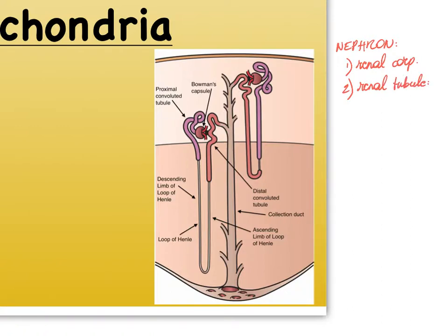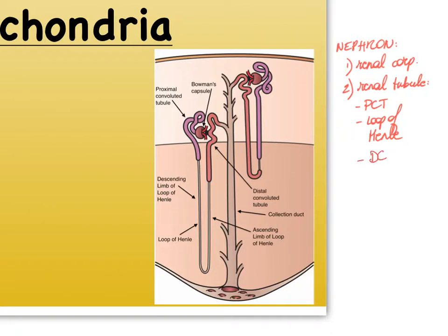The renal tubule is made up of our proximal convoluted tubule, which is directly connected to the Bowman's capsule, illustrated here in primarily the purple color in both pictures. Secondly, we find the loop of Henle, which is a loop-like tube that dips into the medulla of the kidney. And then finally we have our distal convoluted tubule — it's the reddish one here.